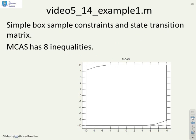Here's a simple example, video 5.14 example 1. This one had very simple sample constraints, basically box constraints and a simple dynamic. If you put this into the code, it tells you the MCAS is just a little bit smaller on these corners. But the key thing is only eight inequalities. It's stripped out all the redundant ones you didn't need.